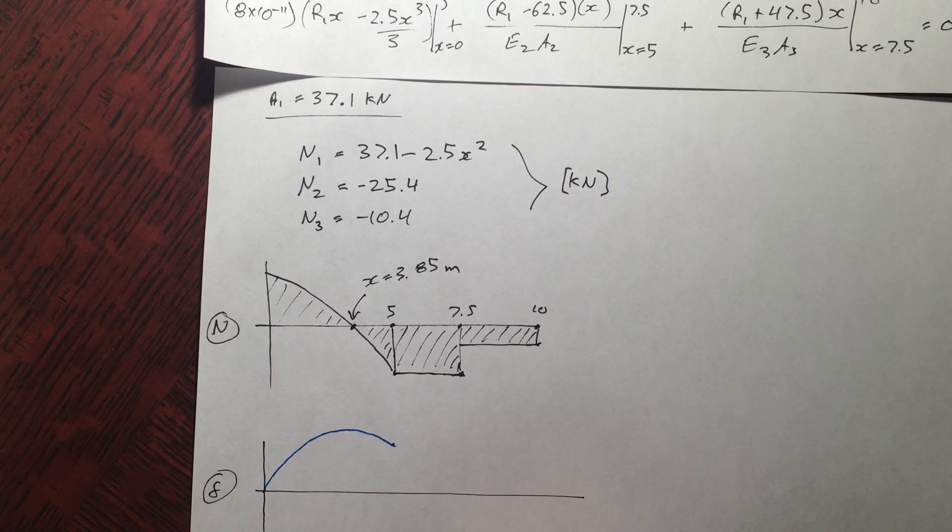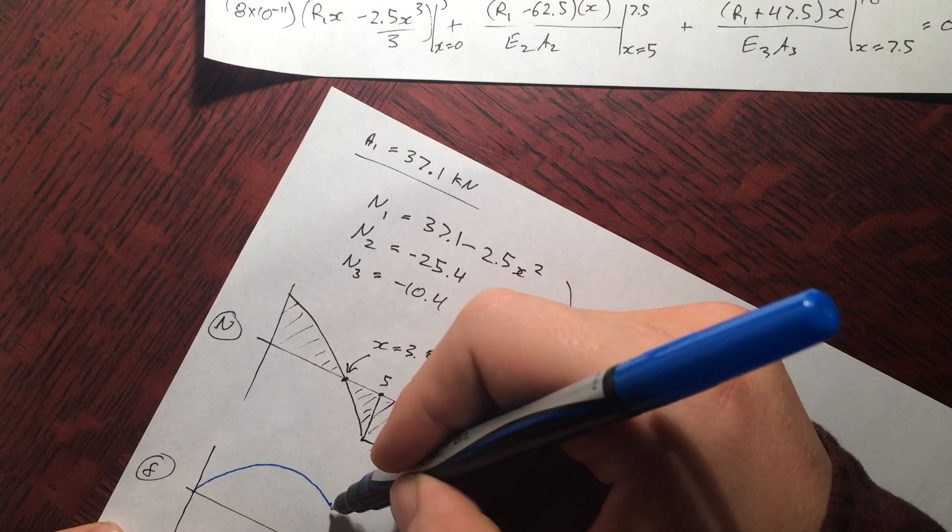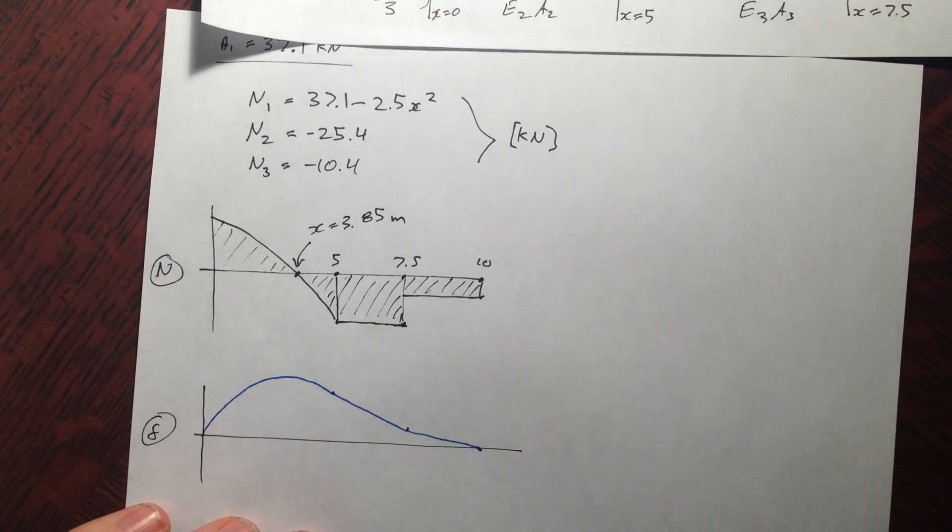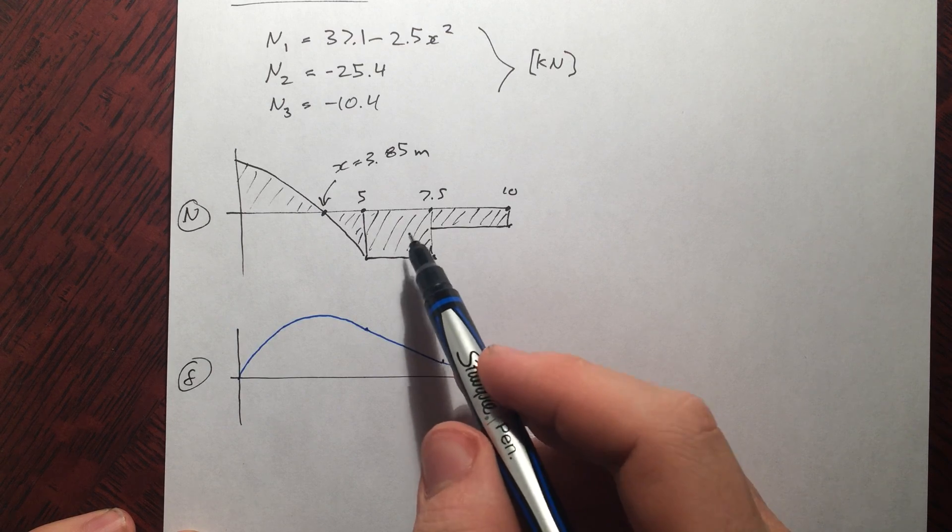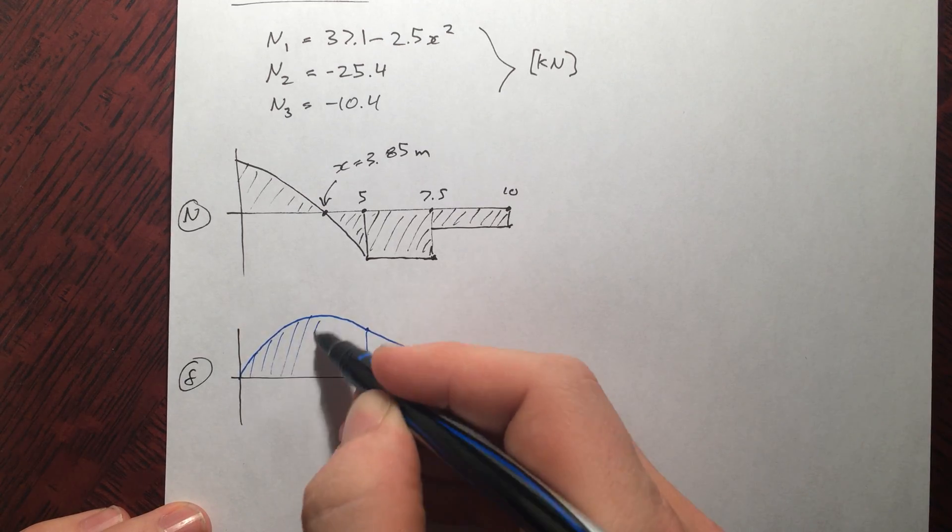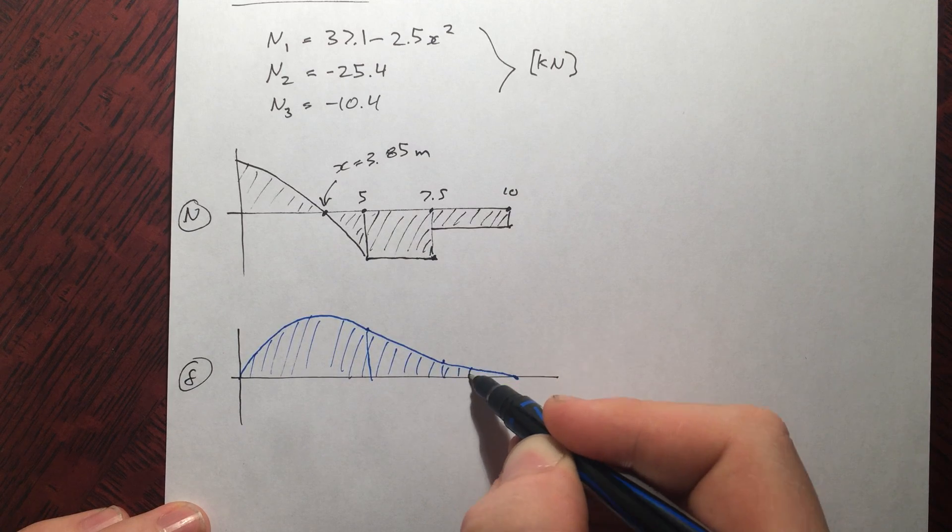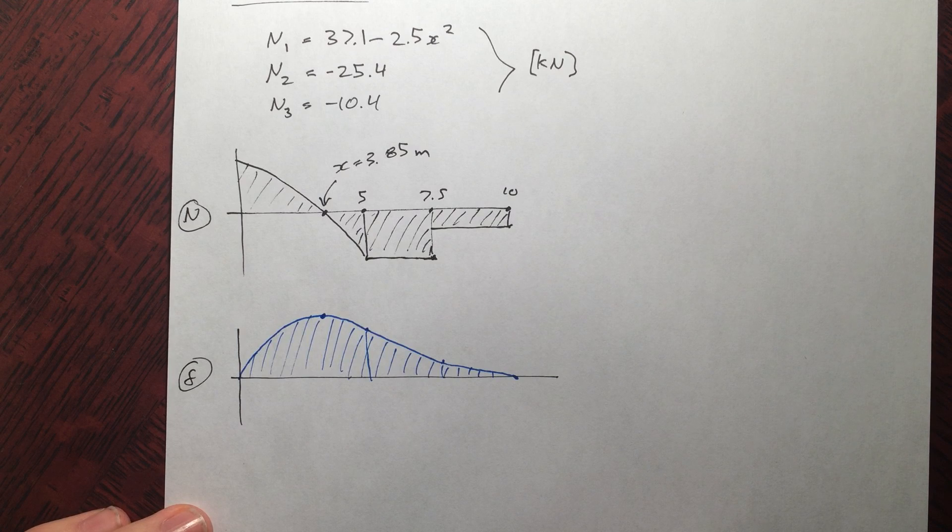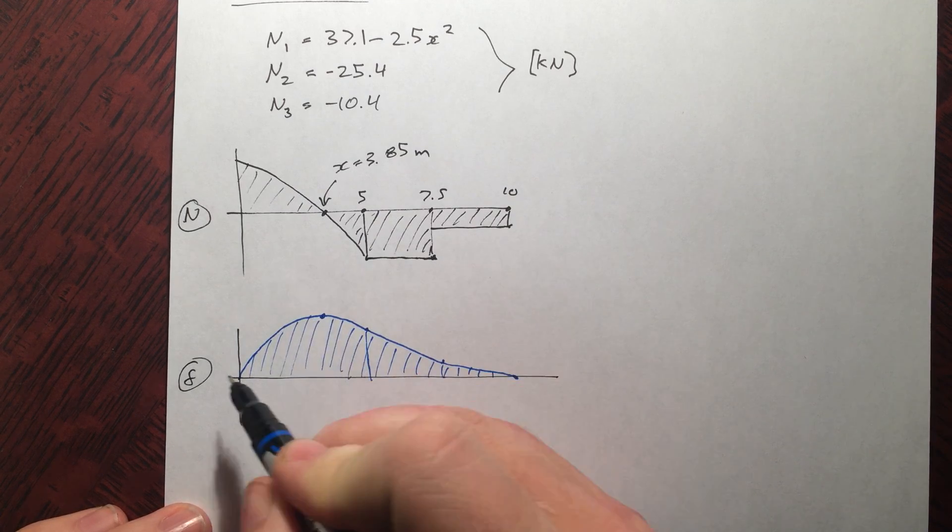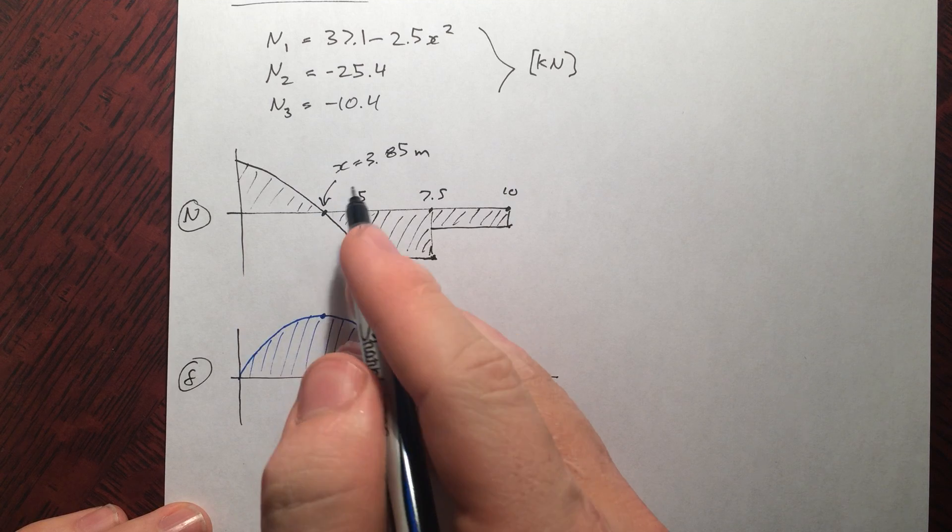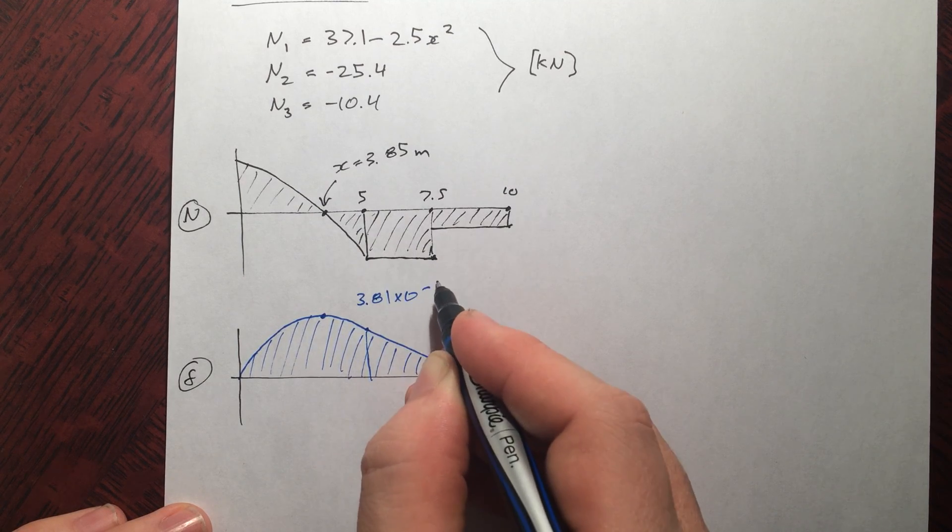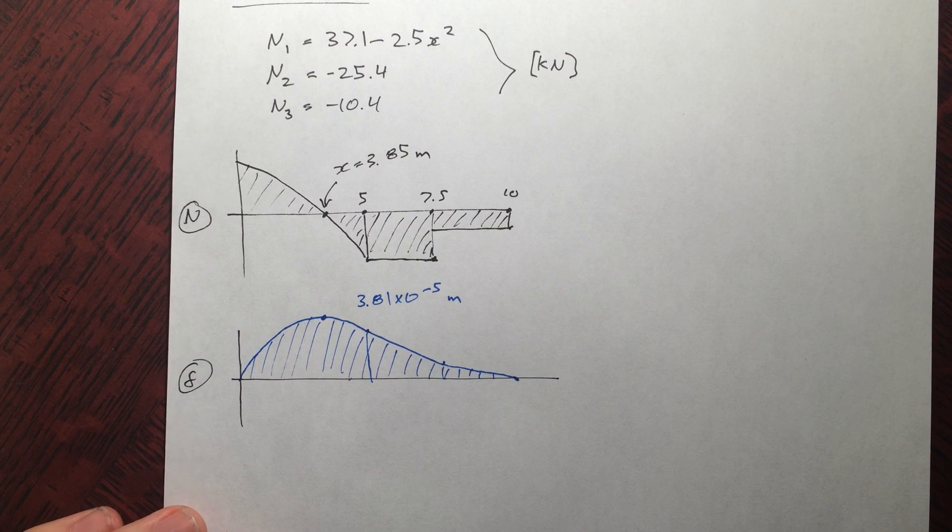It goes up, it goes down, it goes on a steep angle here, and then a relatively shallow angle as it goes off toward the end there. That makes sense because this is greater in magnitude so it's going to be steeper, less in magnitude, less steep. Let's color this in. And the point of interest I talked about before is actually the maximum value here, which makes sense. You know in math, when the derivative of a function equals 0, it has a maximum or minimum value. So we know that N is the derivative of this and equals 0, so it has a maximum at that point. The maximum is 3.81 times 10 to the minus 5 meters, and of course it occurs at x equals 3.85.